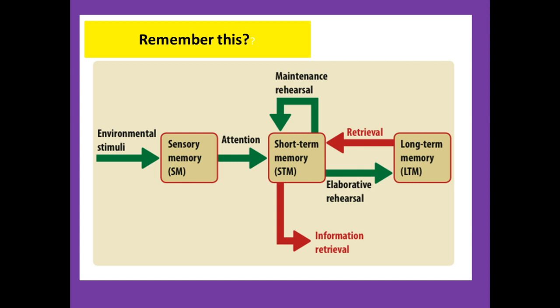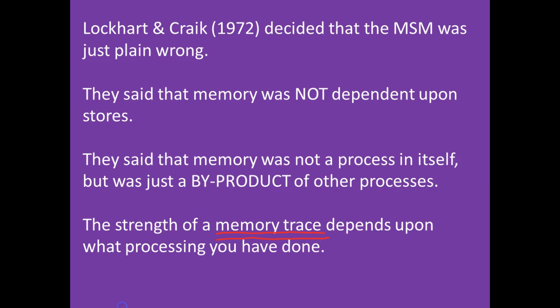Remember Atkinson and Shiffrin's model? Although a good jumping-off point, it has been criticized for being too linear and too simplified, looking at unitary storage when we know that even long-term memory can be split into episodic and procedural. Lockhart and Craik decided it was wrong. They went for a model that looked at processes rather than stores, and denied that where storage was located was important at all.